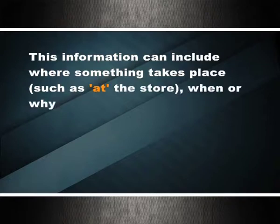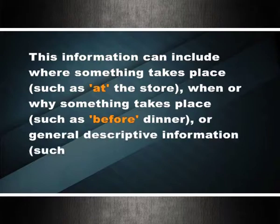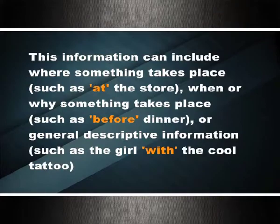Definition of preposition: there are approximately 80 to 100 prepositions in the English language. Prepositions are words that introduce information to the reader — where something takes place, such as at the store; when or why something takes place, such as before dinner; or general descriptive information, such as the girl with the cool tattoo. Prepositions show the relationship between a noun or pronoun and other words in the sentence. They are always followed by nouns or pronouns, and are called the biggest little words in English because they have very important functions.